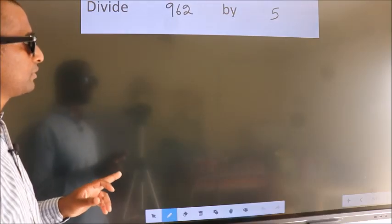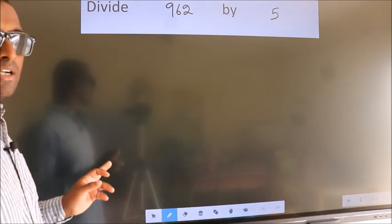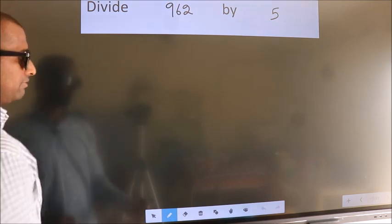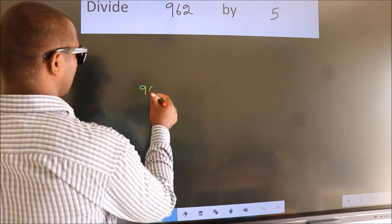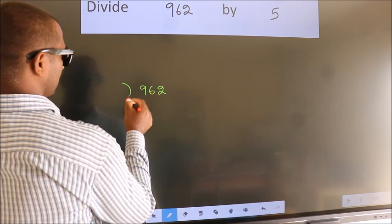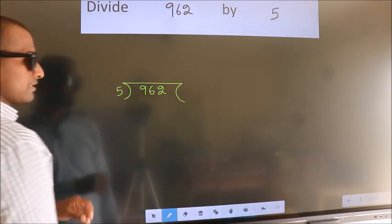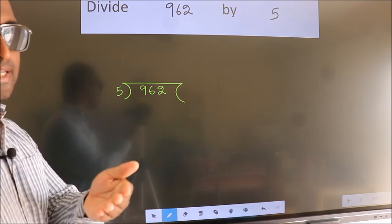Divide 962 by 5. To do this division, we should frame it in this way. 962 here, 5 here. This is your step 1. Next.